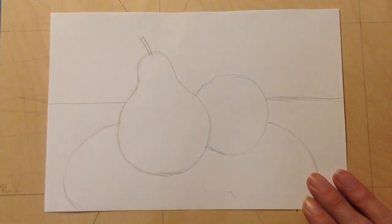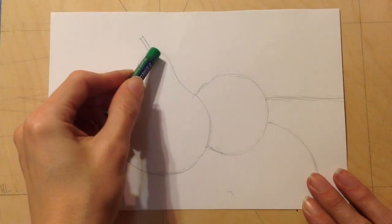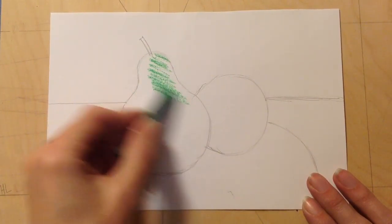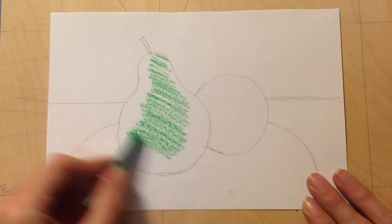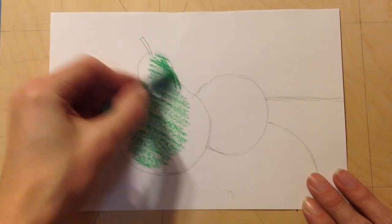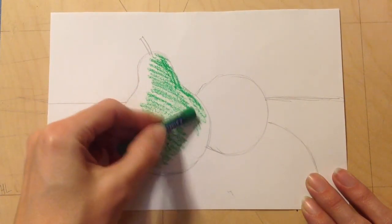Now, I'm going to take my color, whichever color I'm choosing to start off with, and lightly color in my first piece of fruit. And the reason why I say lightly is because if you color it in really thick right away, you won't be able to add the values.